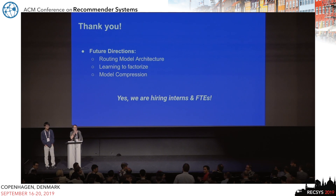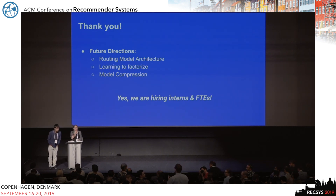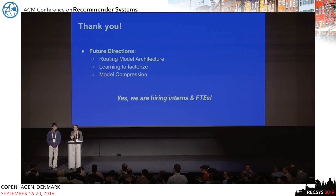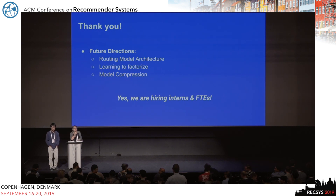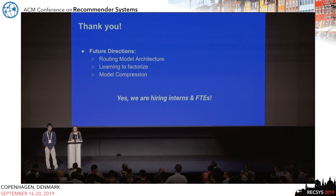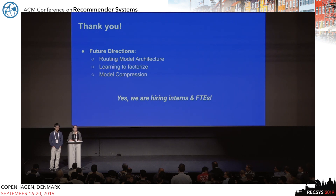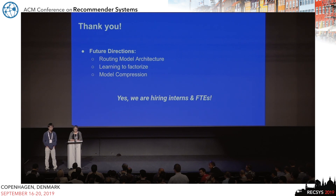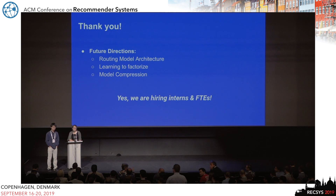Audience question: One difficulty in training mixtures of experts is the collapse of some experts — with soft gating, two or three experts learn faster than others and dominate. How do you solve this issue? Some papers introduce additional loss functions to encourage uniform expert utilization.